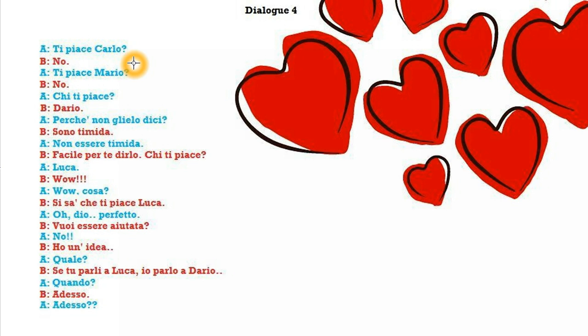Ti piace Carlo? This is an example of an indirect object pronoun. Carlo is the subject. Piace is the verb piacere in the third person singular. A te — Carlo seems nice to you, so basically you like Carlo. The way you say it in Italian is Carlo seems nice, seems good to you.